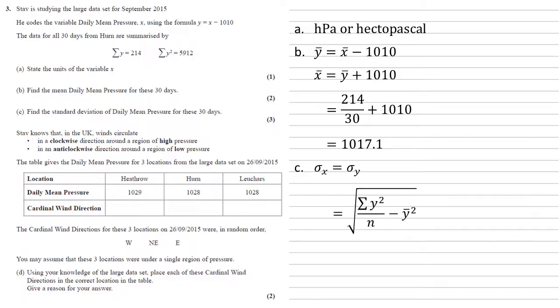We can work this out. Here's our formula for the standard deviation: the square root of the sum of y squared over n minus the square of the mean. Putting our numbers in, we've got 5912 over 30 minus the square of 214 over 30, which gives us a final answer of 12.1.